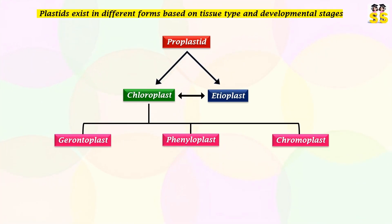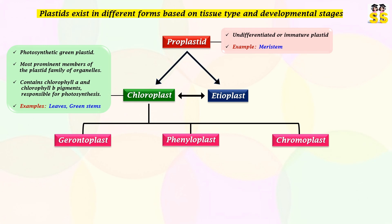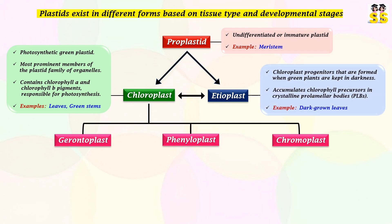Proplastid is an immature plastid that acts as a precursor in the development of all types of plastids, found in plant meristems. Chloroplast is a photosynthetic green-colored plastid found in green leaves and green stems, containing chlorophyll pigments A and B, responsible for photosynthesis. Etioplast is the initial stage of chloroplast that is formed when green plants are grown in darkness, and it accumulates chlorophyll precursors in prolamellar bodies.